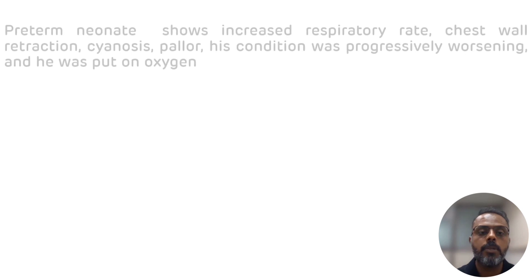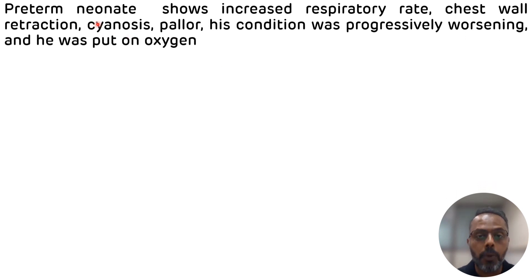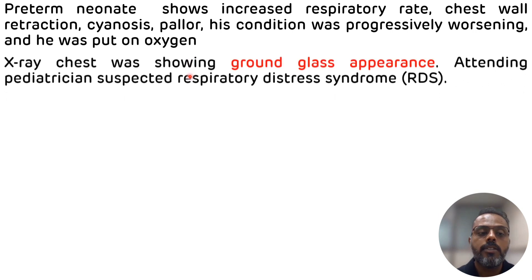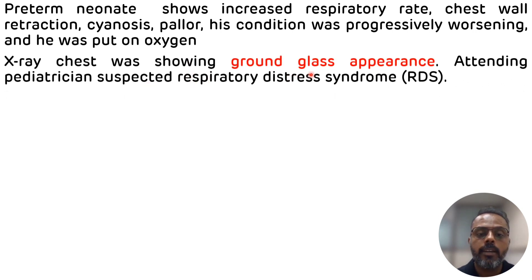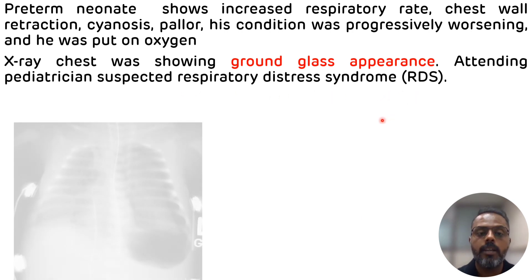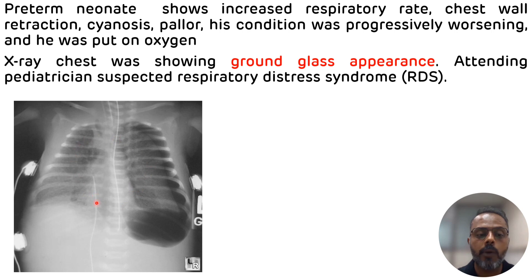The description: a preterm neonate presented with increased respiratory rate, chest wall retraction, cyanosis, and his condition was progressively worsening — he was put on oxygen. Chest X-ray showed a ground-glass appearance, and the attending pediatrician suspected respiratory distress syndrome. This picture of the chest X-ray shows ground-glass appearance due to alveolar atelectasis along with granular opacities.